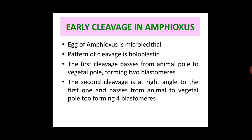The egg of Amphioxus is microlecithal or oligolecithal, and the pattern of cleavage is holoblastic. The first cleavage is meridional and passes from the animal pole to the vegetal pole. As a result, 2 blastomeres are formed.